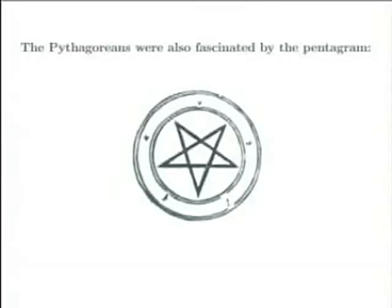The Pythagoreans were also fascinated by the five-pointed star, also called a pentagram, which the later Christians thought was a demonic symbol. But the Pythagoreans seemed to attribute magical properties to it. This is actually a picture made by some much later Pythagoreans of a pentagram.